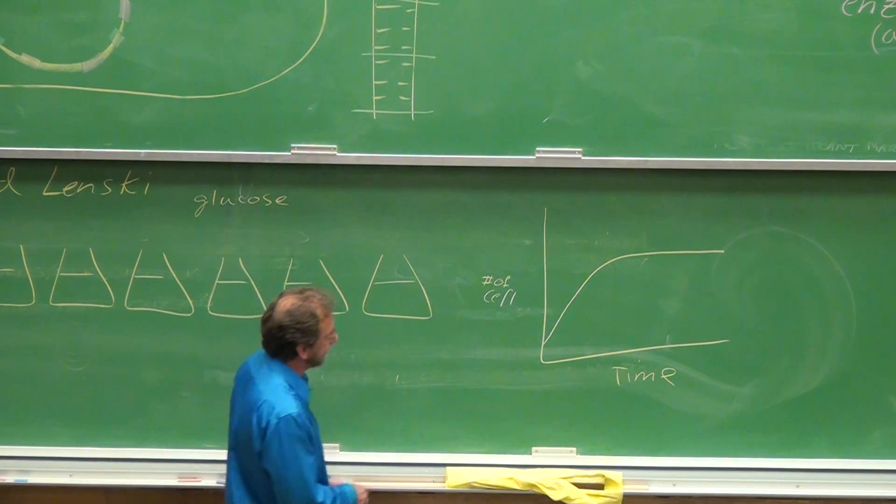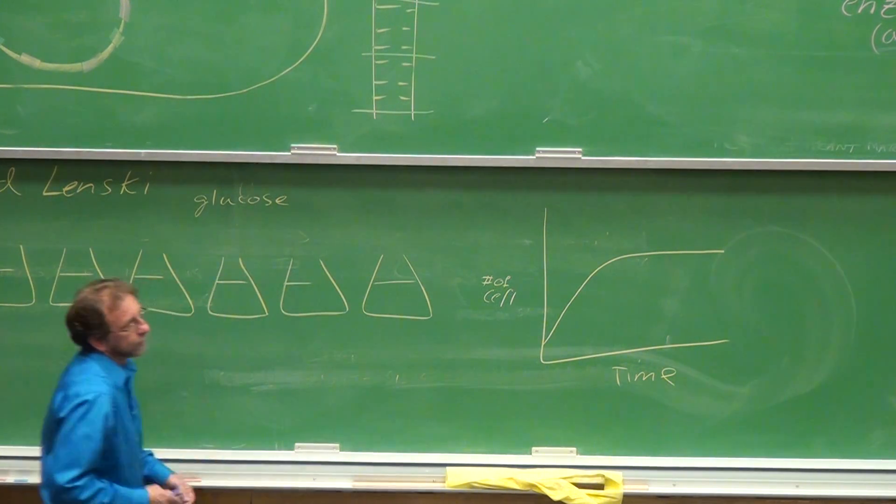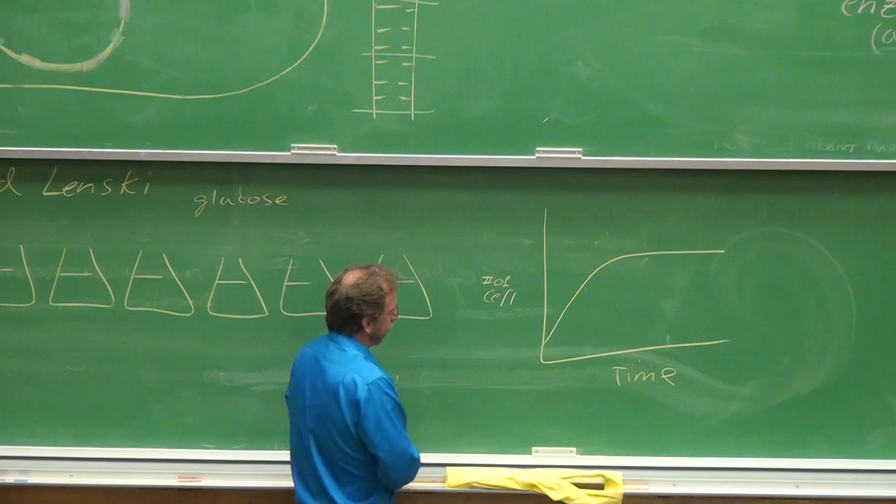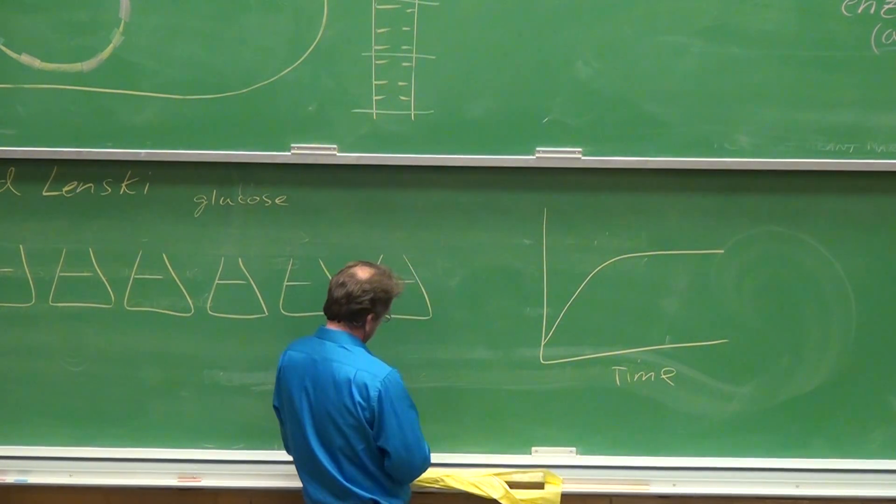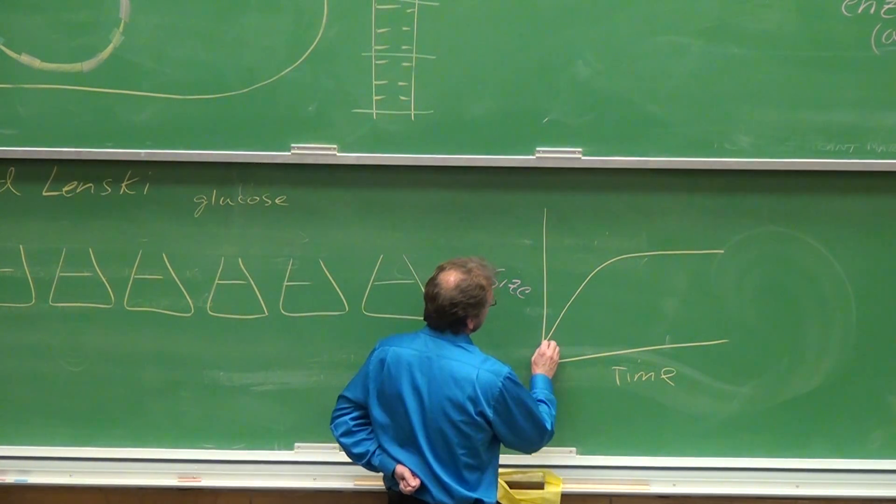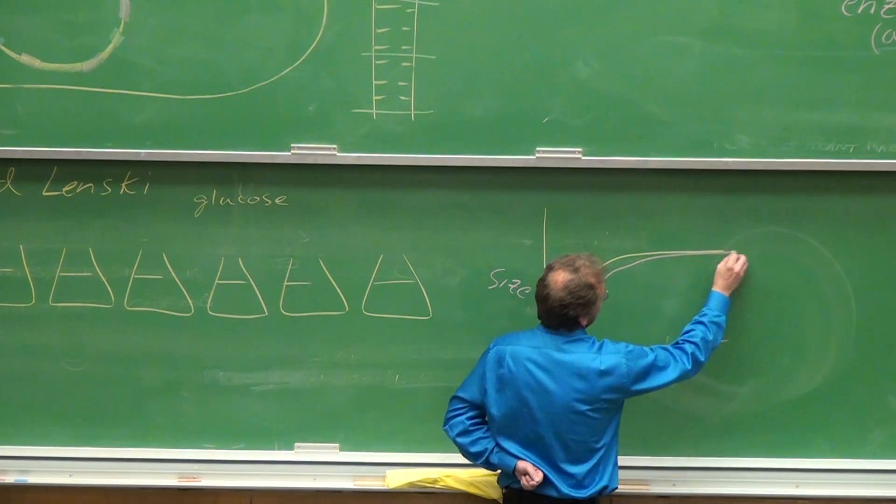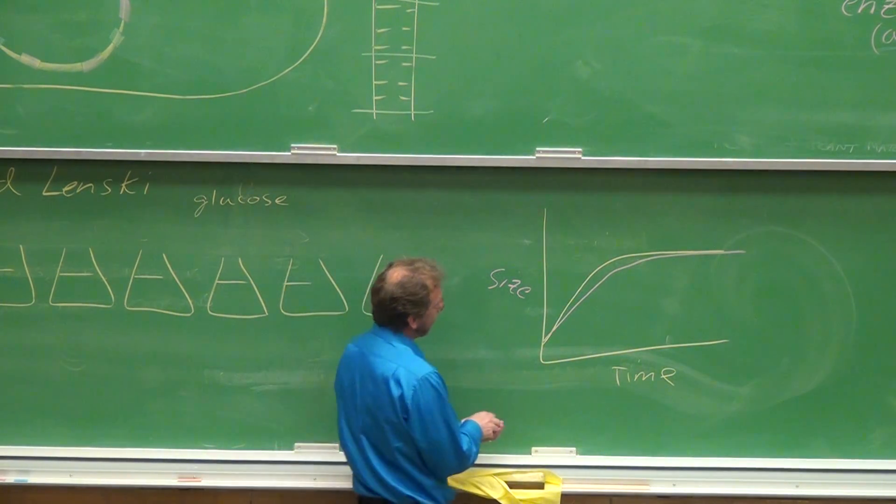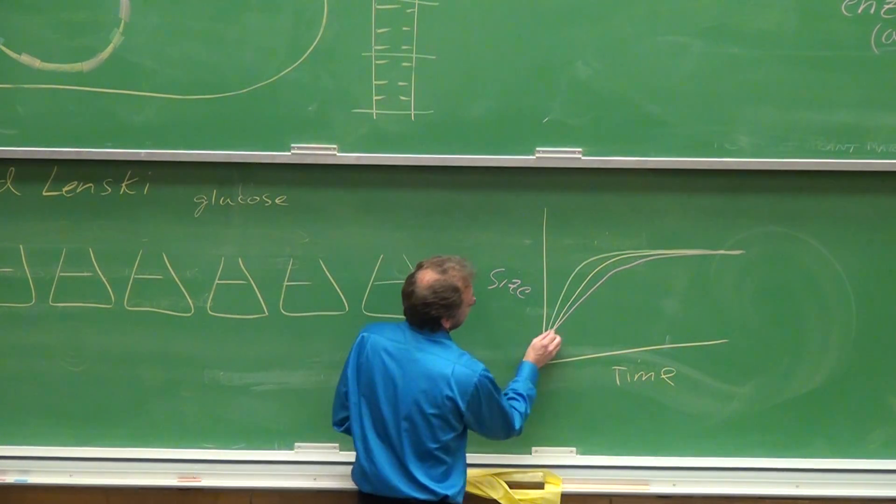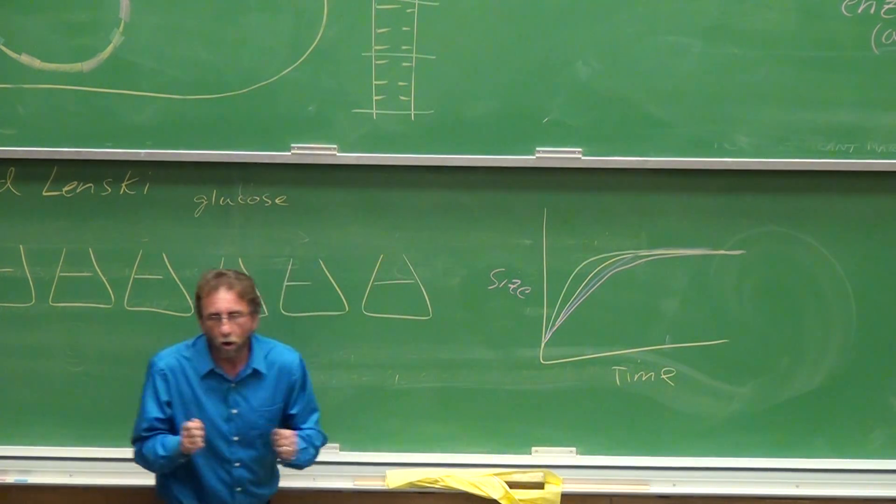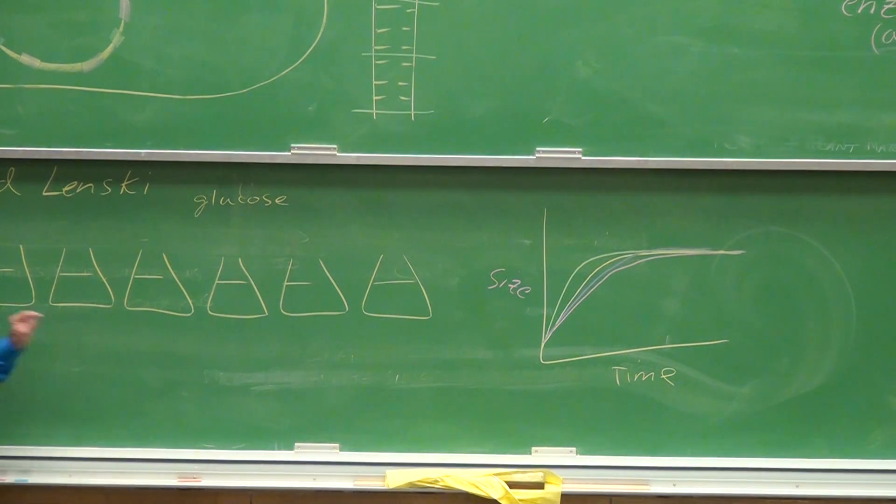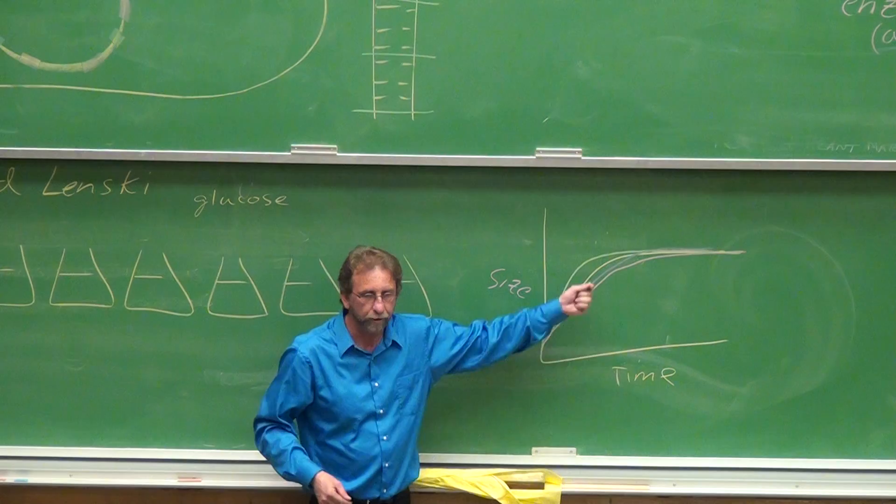But not only that, they didn't just get better and more efficient at using the glucose, they got bigger too. Over time, they saw the cells increase in size. Now, not all of the cells took the same route. Some flasks maybe got there sooner, other flasks took a different approach. But all 12 lines got more efficient at using the glucose, and they got bigger. The cells got bigger.